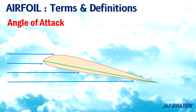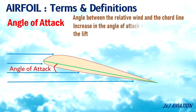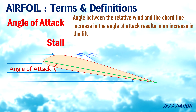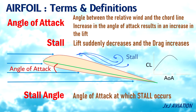Angle of attack: the angle between the relative wind and the cord line. An increase in the angle of attack results in an increase in the lift. Stall: a condition in which the lift suddenly decreases and the drag increases because of an increase in the angle of attack. Stall angle: the angle of attack at which stall occurs.